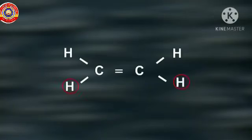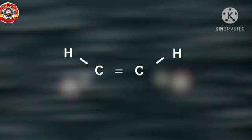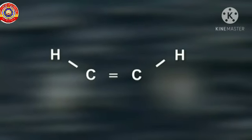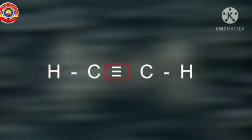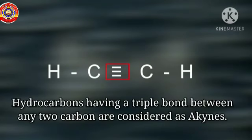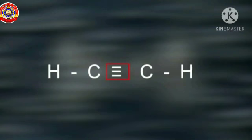What will happen if we remove one hydrogen each from each carbon atom of a two-carbon alkene? In order to complete the valency of carbon, a triple bond is formed between the carbon atoms. Hydrocarbons having a triple bond between any two carbon atoms are named as alkynes.